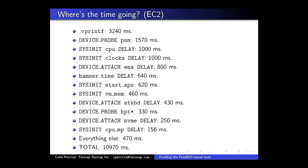On EC2: over three seconds spent printing to the console — almost a third of the total boot time spent printing. A second and a half probing the PS/2 mouse, which oddly enough EC2 instances don't have, but we look for them anyway. One second on each of the two clock calibrations. ENA — the Elastic Network Adapter, a very high-speed adapter Amazon designed for EC2 — takes some time. Start APs is spending a lot longer on EC2 than on my laptop.